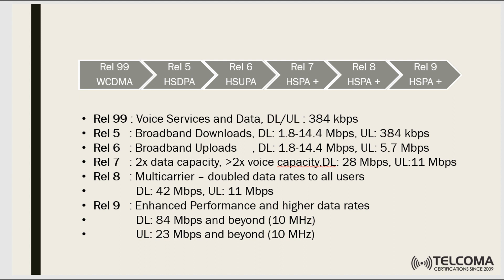Then came Release 7, with the main motive to double both data capacity and voice capacity — that is 28 Mbps in the downlink and 11 Mbps in the uplink. With Release 8, 3GPP introduced multi-carrier technology, where one more carrier of equal capacity can be added for the same connection, doubling data rates to 42 Mbps downlink and 11 Mbps uplink. In Release 9, capacity was further increased to around 84 Mbps and beyond for a 10 MHz channel, and 23 Mbps and beyond in the uplink.